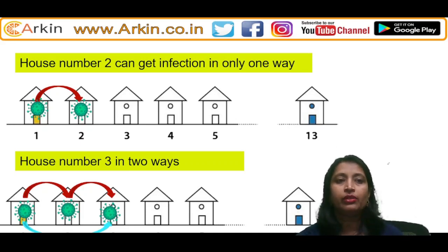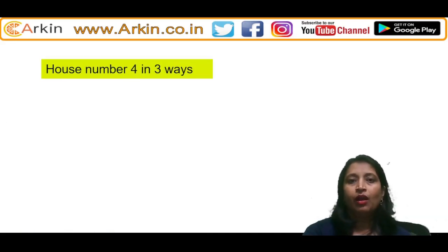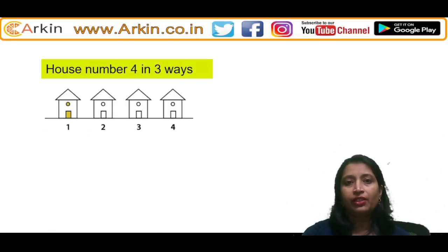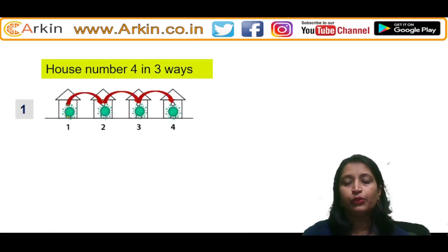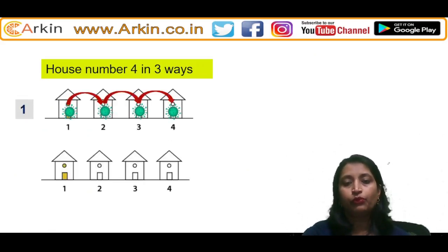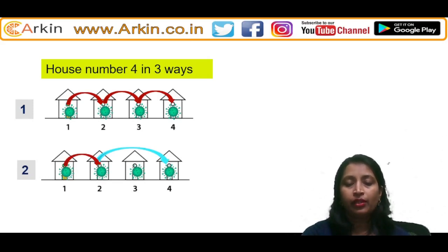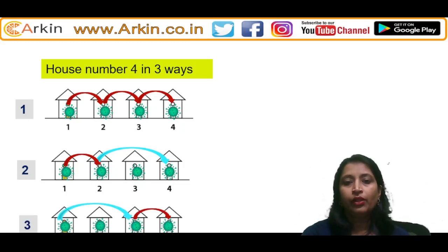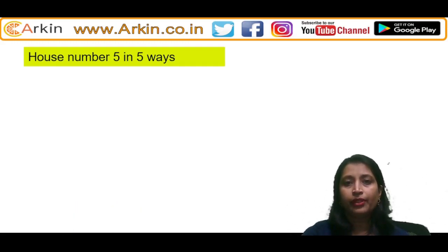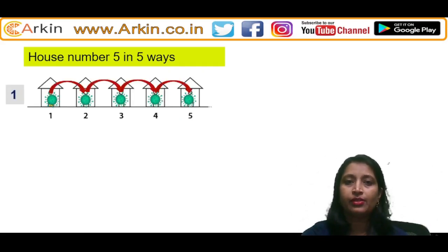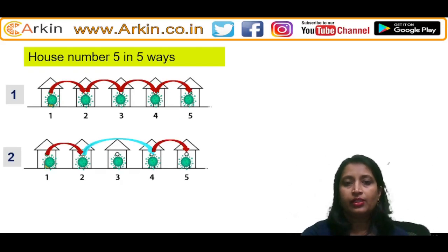House number four will get infected in three ways: one to two, two to three, three to four; then one to two, and jumping from two to four; and then one to two, one to three, three to four. House number five gets infected in five ways, as shown here.